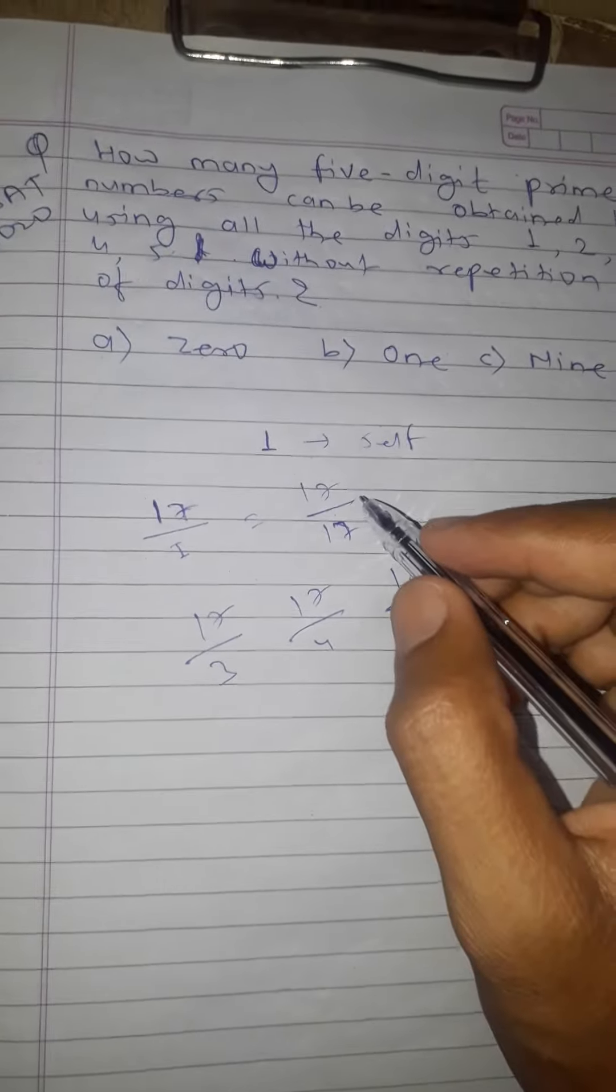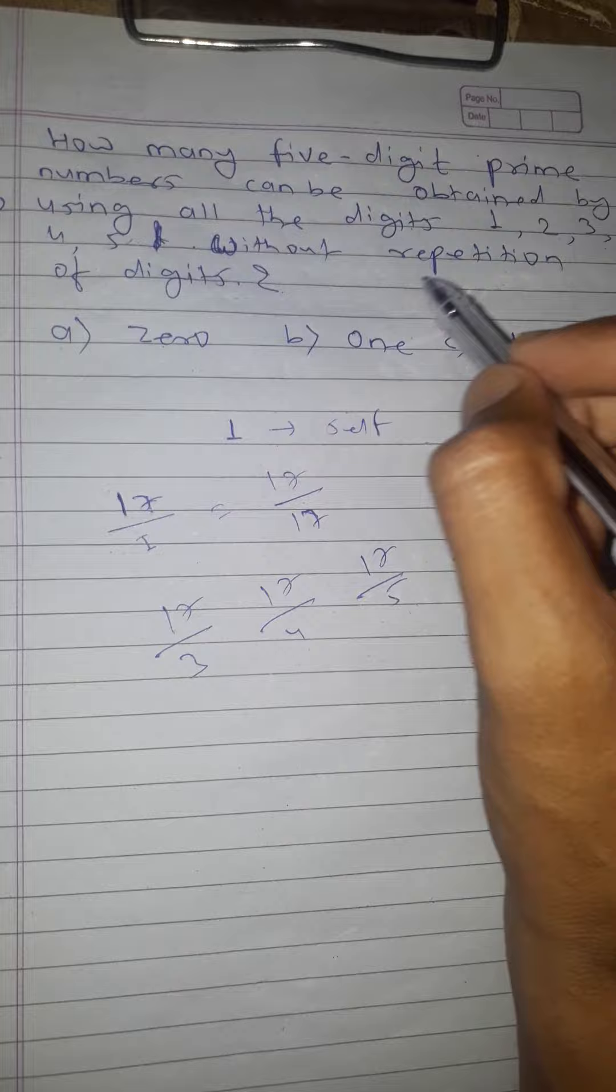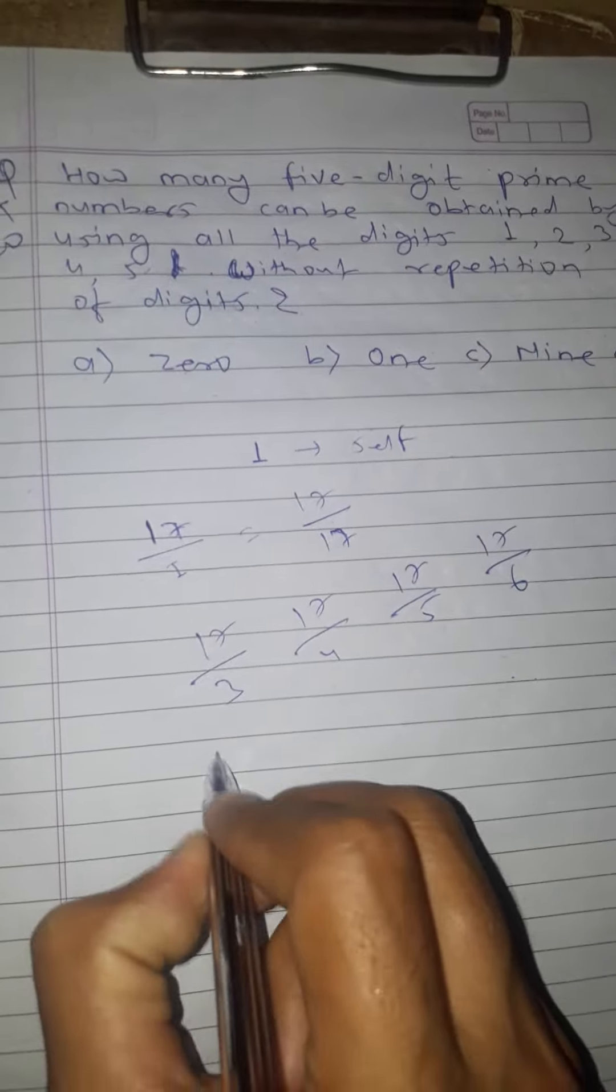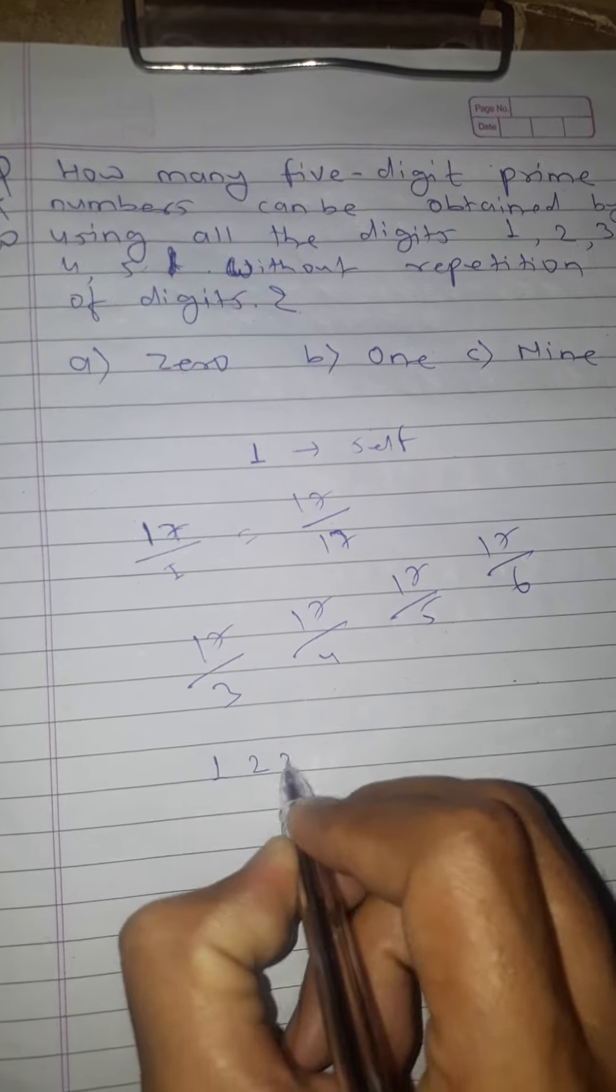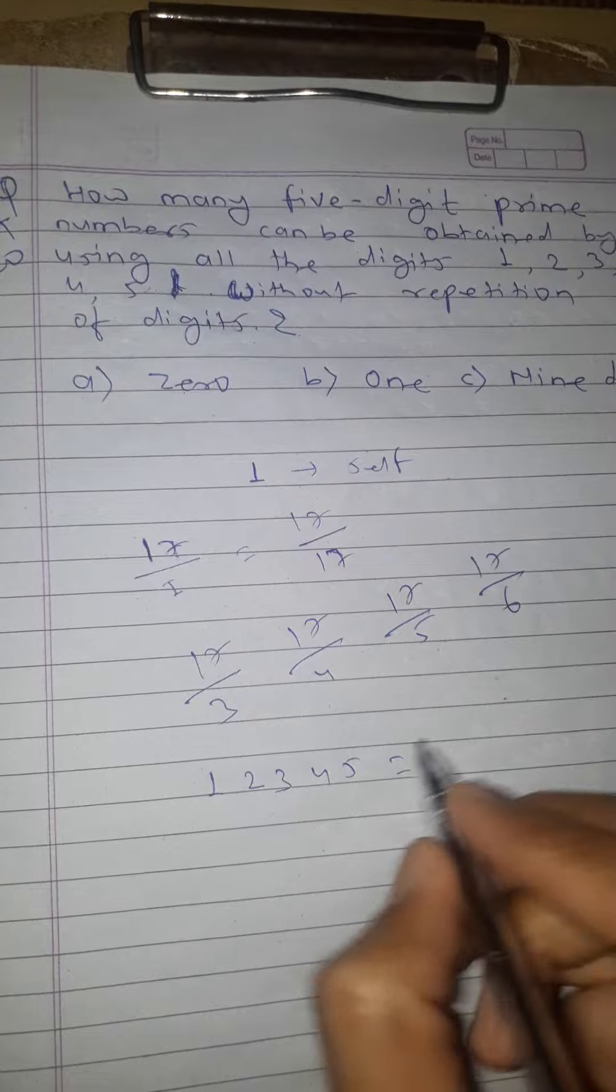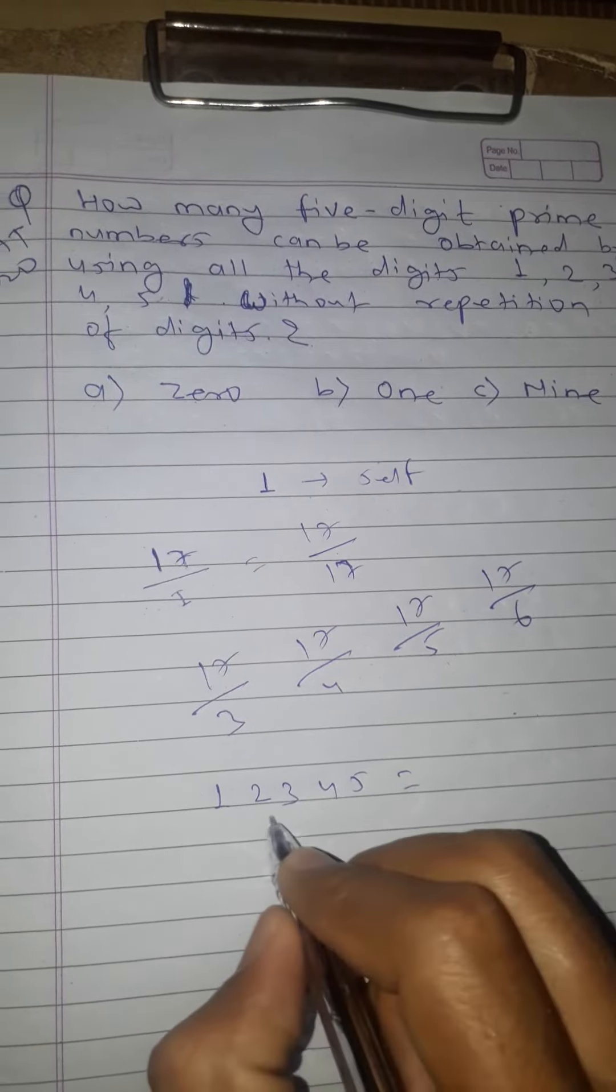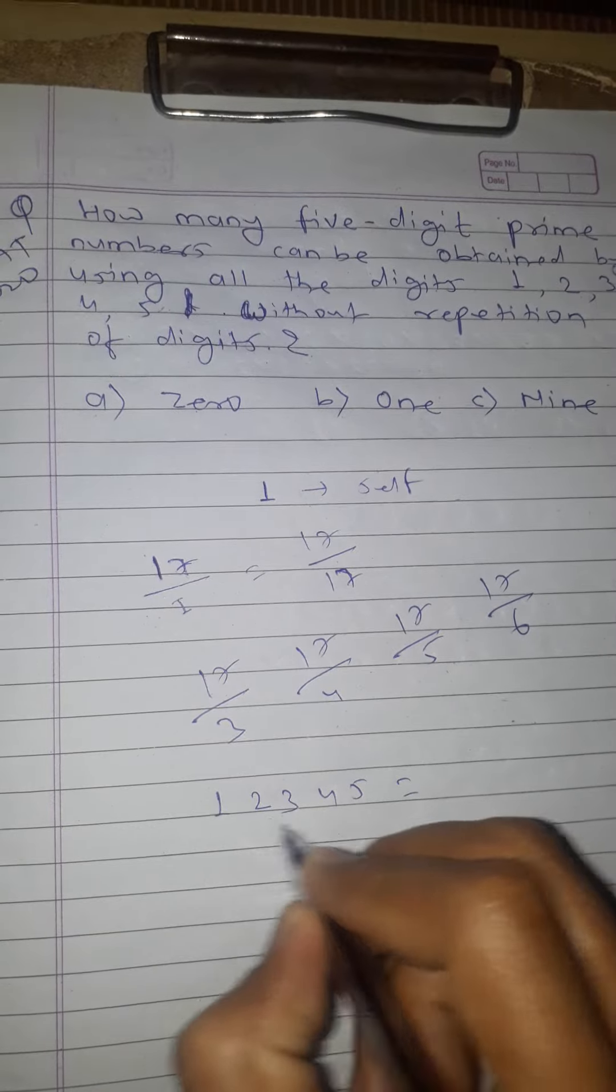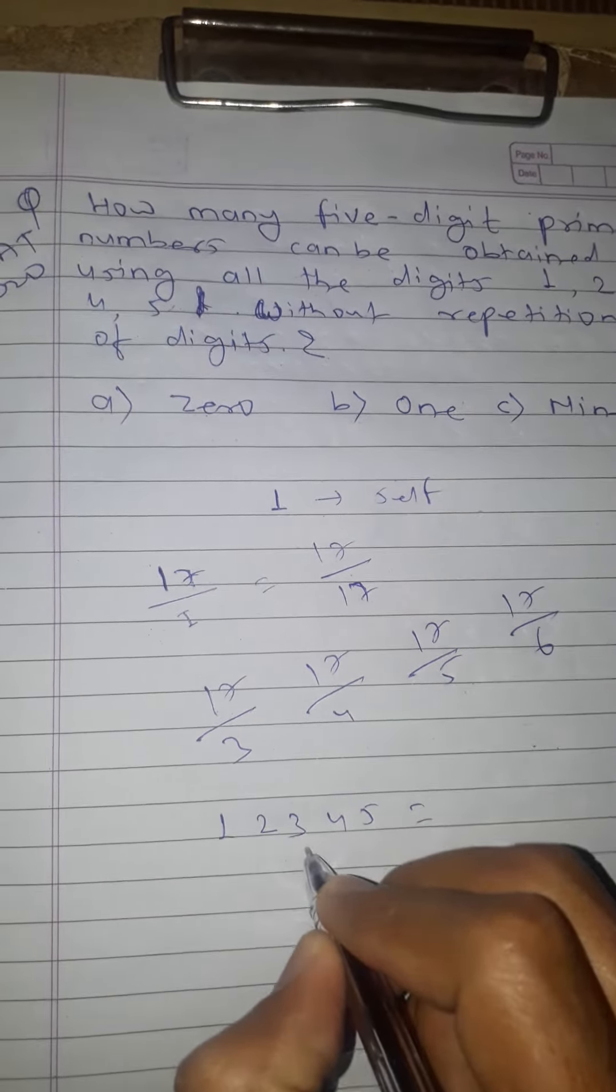Now we calculate using the digits 1, 2, 3, 4, 5. The number is 12345. The addition is: 1 plus 2 equals 3, plus 3 equals 6, plus 4 equals 10, and plus 5 equals 15.